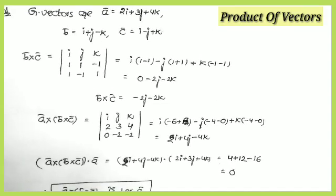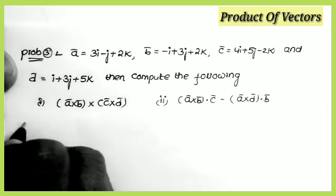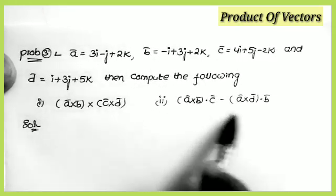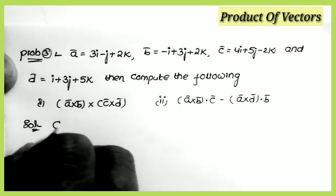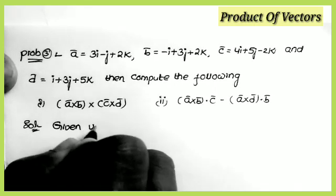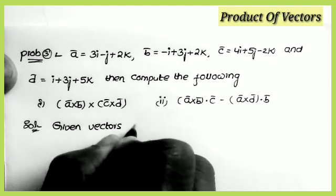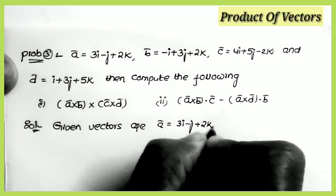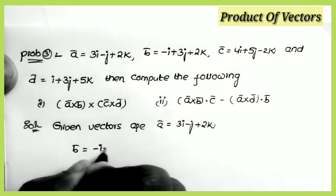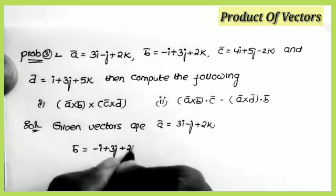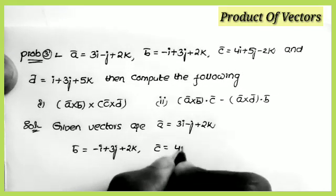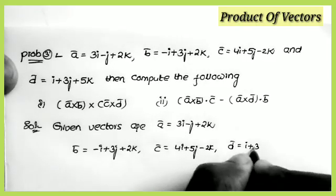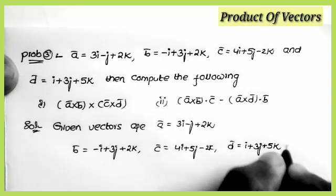This is a most important question. Now the next problem — also most important. Four vectors are given: a̅ = 3i − j + 2k, b̅ = −i + 3j + 2k, c̅ = 4i + 3j + 5k, and d̅. We have to find two values using these vectors.